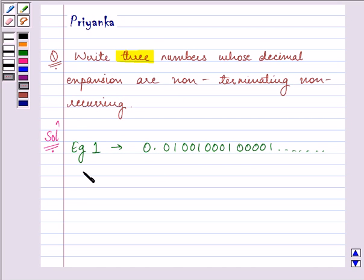Proceeding to the next example, in place of 1 we can have 2, like 0.2020020002000200002... and so on. So this is again one example of non-terminating, non-recurring.